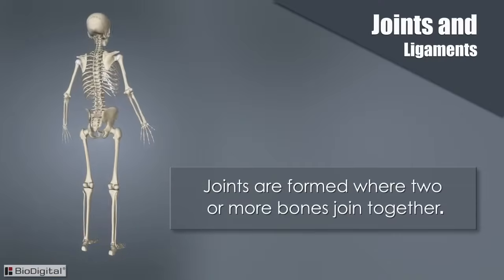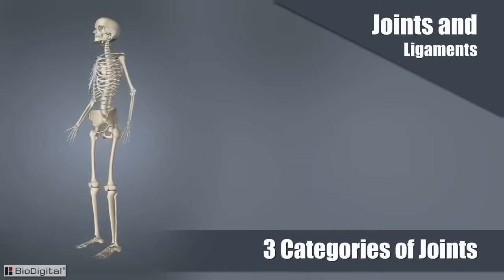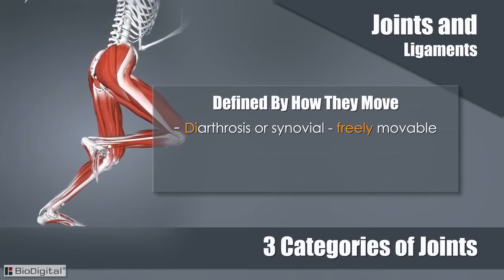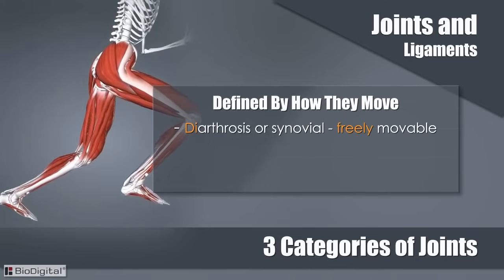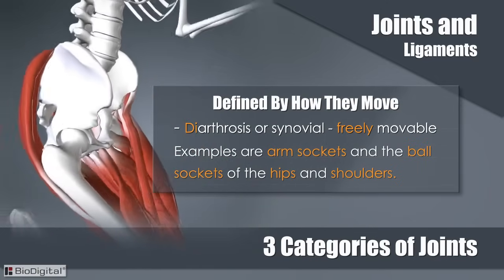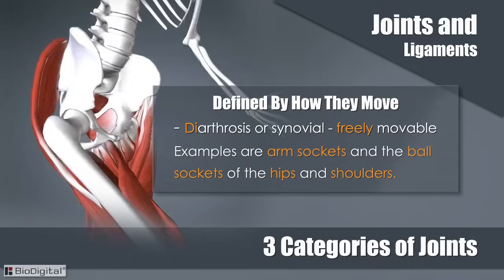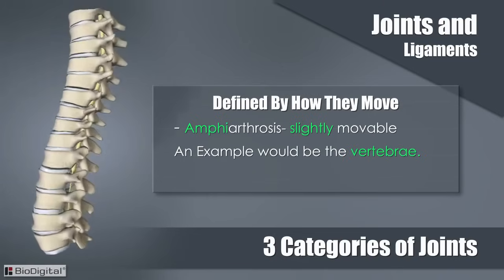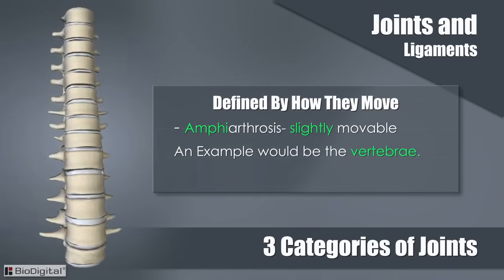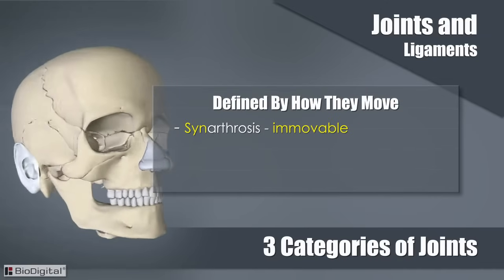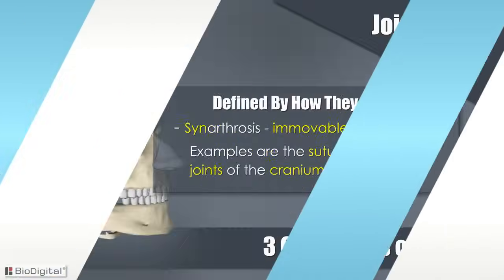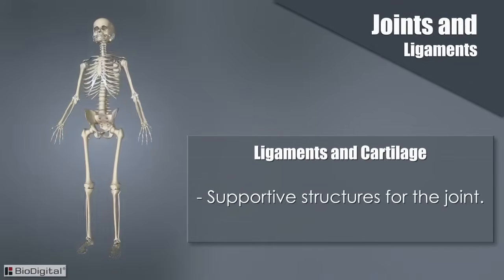Joints are formed where two or more bones are joined together. The joints are divided into three major categories, defined by how they move. Diarthrosis, or synovial, means freely movable — an example would be the ball and socket of the shoulder and hips. Amphiarthrosis is slightly movable — an example would be the vertebrae. And synarthrosis is immovable — an example of an immovable joint would be the sutures, or joints, of the cranium. Ligaments and cartilage are important supportive structures for the joint.